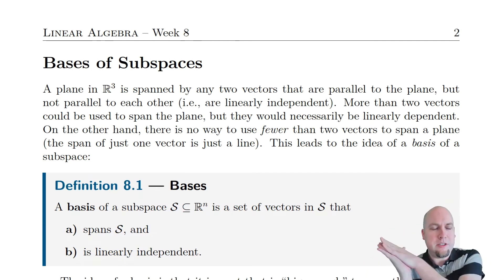For example, if you have a two-dimensional plane in three-dimensional space, you could write that plane as a span of 65 different vectors. Just pick any 65 vectors on that plane, and as long as they're not all collinear, then the span of those 65 vectors is going to be the entire plane. But that's kind of a silly thing to do, right? Why would you use 65 different vectors when you could get away with many fewer? You could throw a lot of those away, and the span would still be the entire plane.